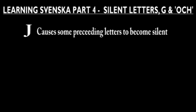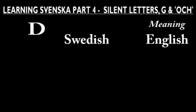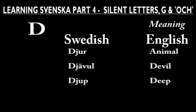As I mentioned in episode 2, the letter G causes a lot of preceding letters to become silent. These letters are D, G, H, and L. For D, some examples are: djur, djävul, djup.